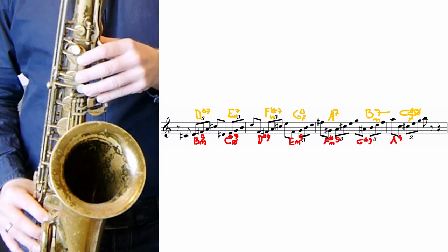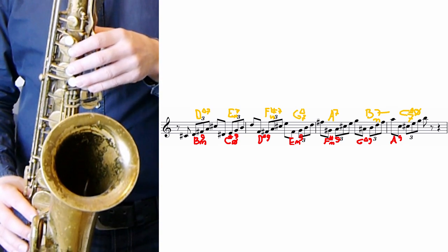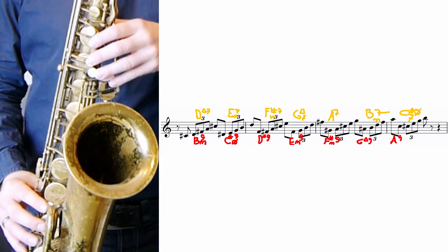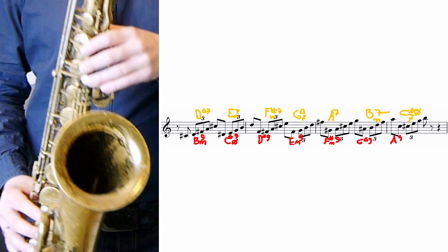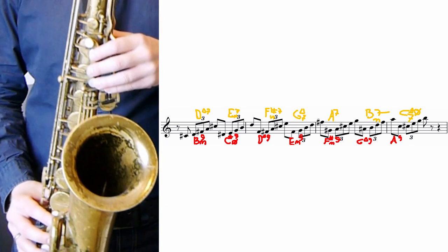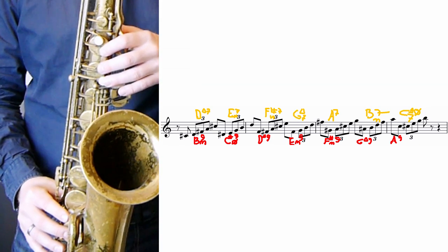But you can also work this out as an upper structure of the following chords. Look at the red markings below, those are the upper structures. The B minor 9, the C sharp half diminished 9, the D major 9, the E minor, the F sharp minor 9, G major 9, the A9.